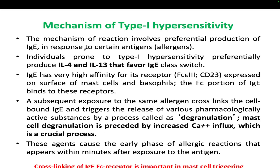The mechanism of Type 1 hypersensitivity involves preferential production of IgE antibody against certain types of antigens — most commonly allergens, or proteins with molecular weight 10 to 40 kilodaltons. Individuals prone to Type 1 hypersensitivity preferentially produce interleukin-4 and interleukin-13, which favor IgE class switching and enhance IgE production.